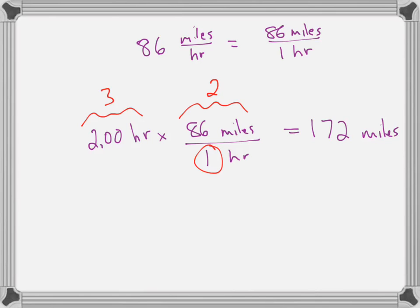Your conversion factor can force the sig figs in your answer. Most English-to-metric conversion factors we assume to have 3 sig figs. In this speed example, our sig figs come from the measured value — 86 — which has 2. So underline the first 2 sig figs of 172: 1 and 7. The last insignificant digit is 2, which is less than 5, so we round down. Our final answer is 170 miles.